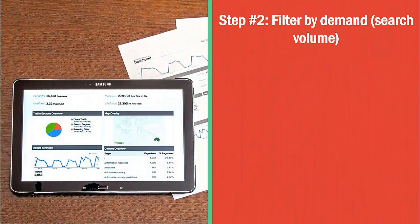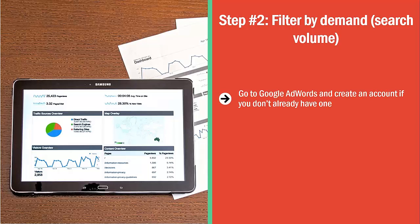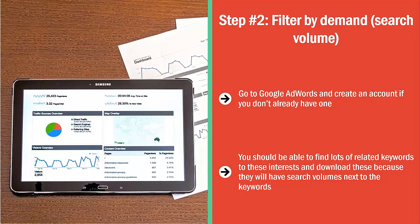Step 2: Filter by Demand Search Volume. Go to Google AdWords and create an account if you don't already have one. Once you're logged in, click Tools and use Google's Keyword Planner tool. Enter in keywords related to the personal interests you listed in Step 1. Find lots of related keywords and download these, as they won't have search volumes next to them. At this point, delete from your list niches that have too little or too much search volume — you want something in the middle.